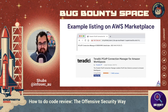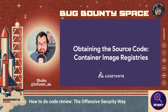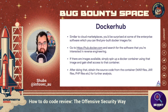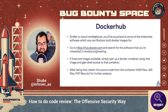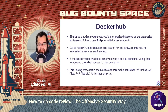Another method of obtaining source code is container image registries. Similar to cloud marketplaces, you'd be surprised at the enterprise software you can find pre-built Docker containers for. If you go to hub.docker.com and search for the software you're interested in reverse engineering, you'll often find something available. You can spin up a Docker container using that image, gain shell access, and obtain all the source code — whether that's WAR files, JAR files, or PHP files.